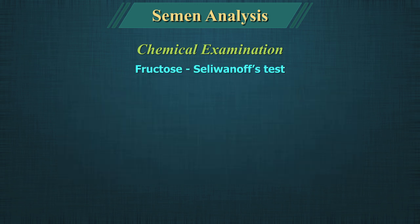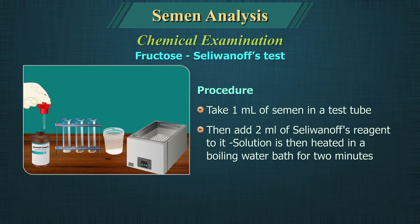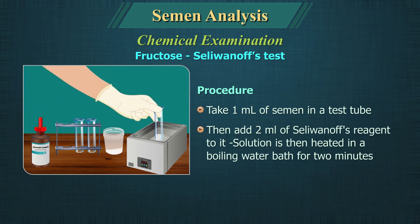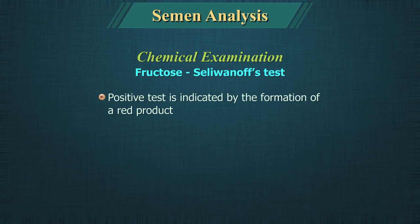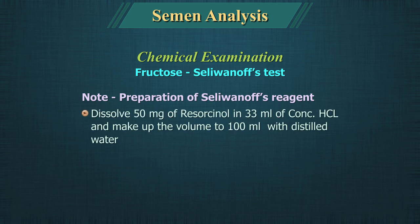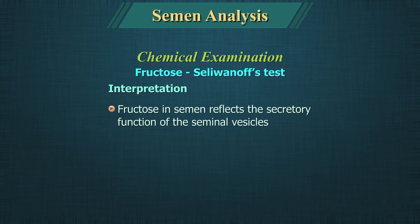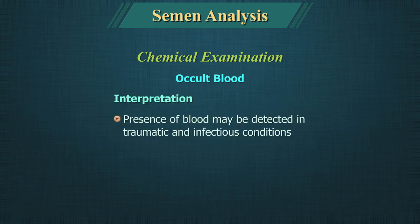Fructose, using Selvinov's test. Procedure: Take 1 ml of semen in a test tube, add 2 ml of Selvinov's reagent, then heat in a boiling water bath for 2 minutes. A positive test is indicated by formation of a red product. For preparation of Selvinov's reagent, dissolve 50 mg of resorcinol in 33 ml of concentrated hydrochloric acid and make up the volume to 100 ml with distilled water. Fructose in semen reflects the secretory function of the seminal vesicle. Occult blood can be done using a urine stick or stool occult blood cards; its presence may be detected in traumatic and infectious conditions.